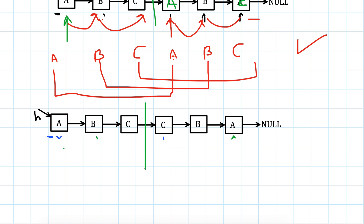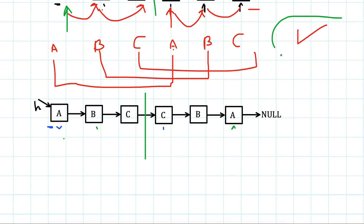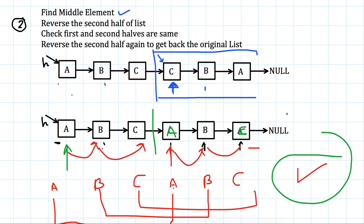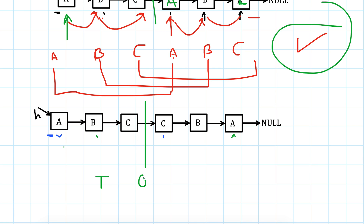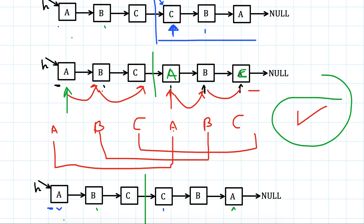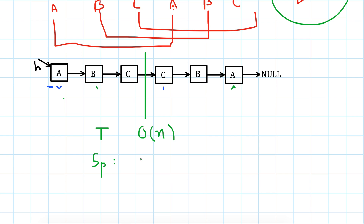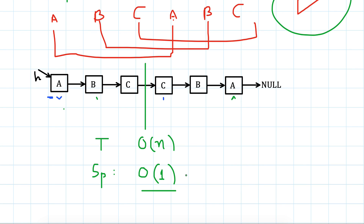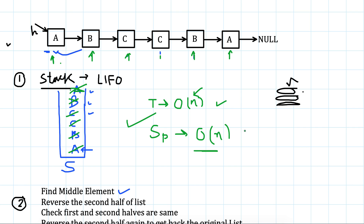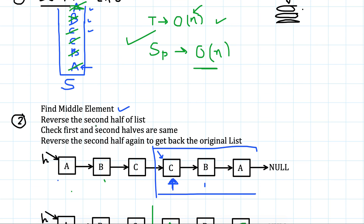Once done, we reverse the second half again to restore the original list. The time complexity is still O(n) since we traverse the list, but the space complexity is O(1) — we only keep a constant number of pointers regardless of the list size. Compared to the stack method which used O(n) time and O(n) space, this second method uses O(n) time and O(1) space, making it the better solution.